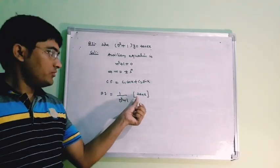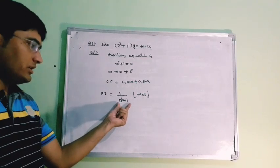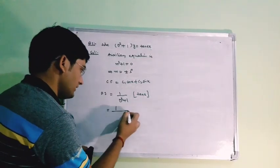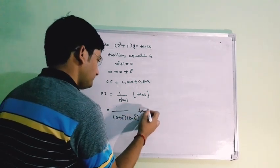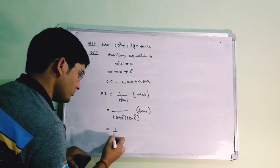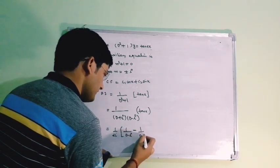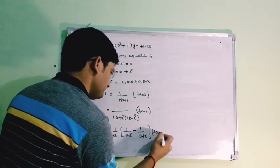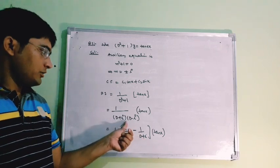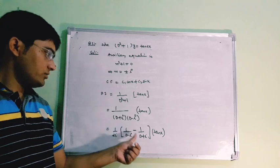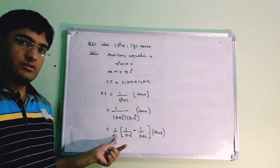Since we do not have any direct formula for tan(x), we use the general method, that is 1/(D−l) of f(x). For that, we need the linear factors of D²+1, which are (D+i)(D−i). So the particular integral becomes 1/[(D+i)(D−i)] of tan(x), which equals 1/(2i) times [1/(D−i) − 1/(D+i)] of tan(x), using partial fractions — you can cross-check that the numerator gives 2i.